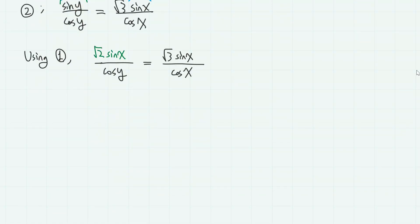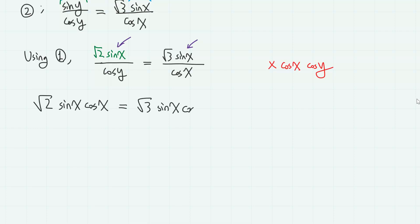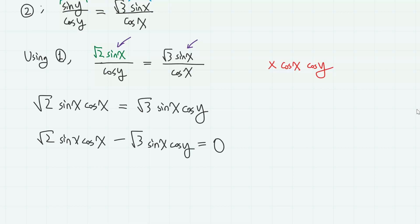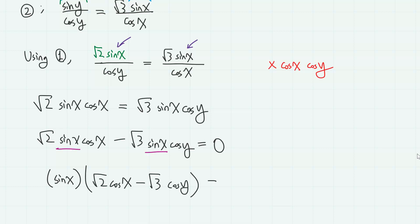This equation is useful because it has sine x on both sides, which can act as a common factor. If we multiply cosine x cosine y on both sides, we have square root of 2 sine x cosine x equals square root of 3 sine x cosine y. So square root of 2 sine x cosine x minus square root of 3 sine x cosine y equals 0, and since sine x is common, we have sine x times (square root of 2 cosine x minus square root of 3 cosine y) equals 0.